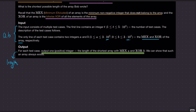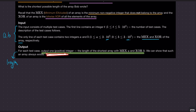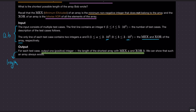So the question is pretty simple: we are given two integers, a and b, where a is positive and b is non-negative. What we want to output is one positive integer — the length of the shortest array with MEX equal to a and XOR equal to b. That is, the smallest non-negative integer not part of this array is a, and the bitwise XOR of all elements equals b.